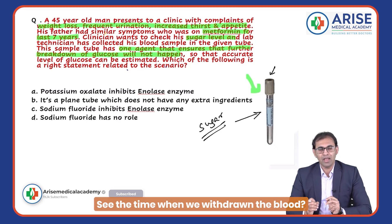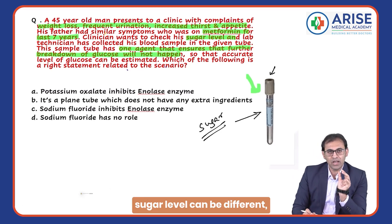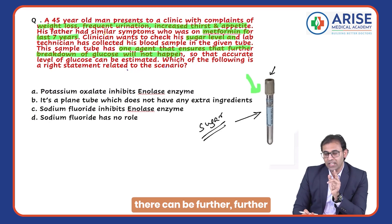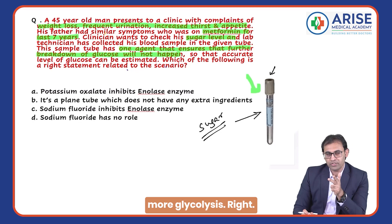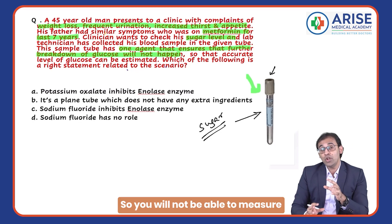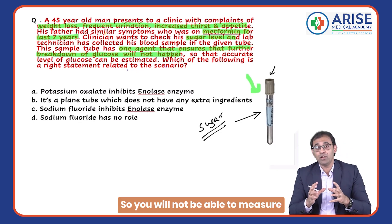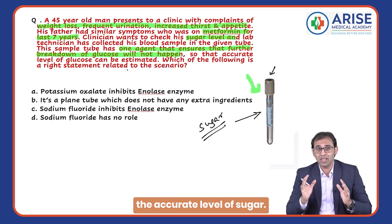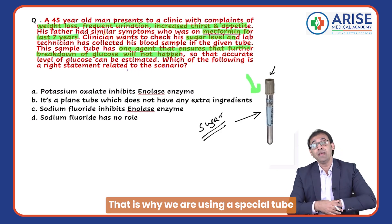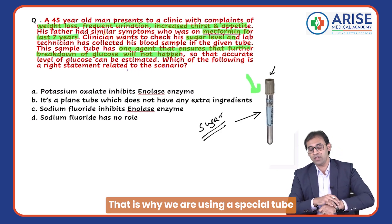When we withdraw the blood, the sugar level may be at one value, but after a few minutes there can be glycolysis — further breakdown of sugar. Because of that, you will not be able to measure the accurate level of sugar.